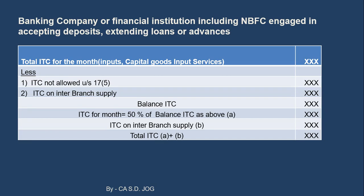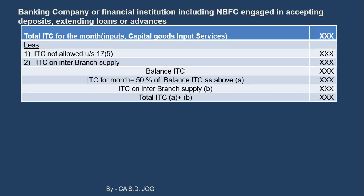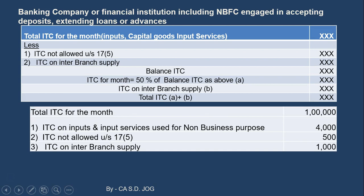Let us understand this with an example. Say total ITC for the month for one particular branch was ₹1 lakh. ITC on inputs and input services used for non-business purpose was ₹4,000. ITC not allowed under section 17 is ₹500, and ITC on inter-branch supply is ₹1,000. This particular branch has two options: option 1 — as per section 17, go for detailed calculation on a one-to-one basis; or option 2 — directly apply 50% plus 100% on ITC for inter-branch supply.